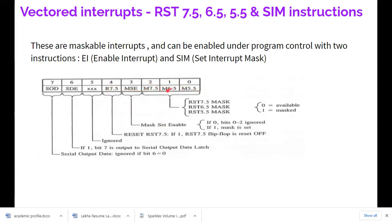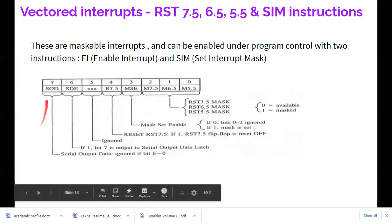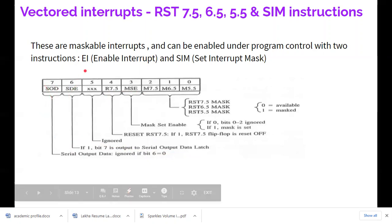If you place one in D4, it can override and reset RST 7.5 — this has higher priority than the mask setting. If you put zero in D4, there is no effect. D5 and D6 are for serial output data, and D7 is the serial output data latch enable.